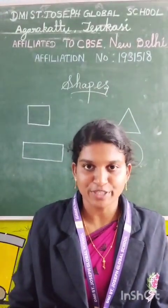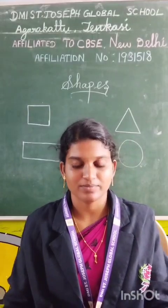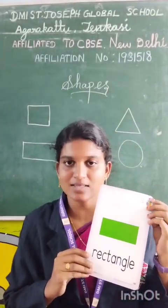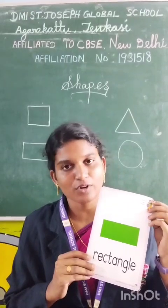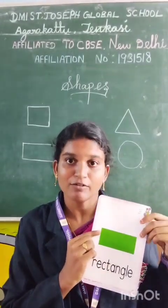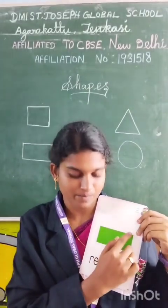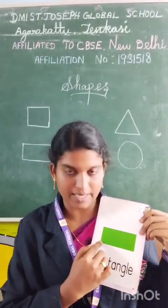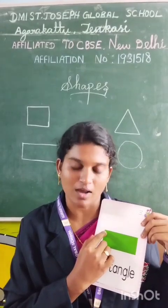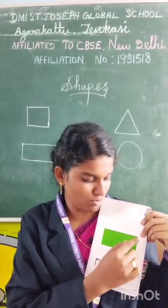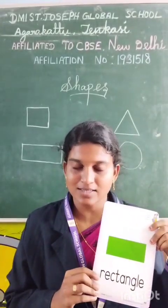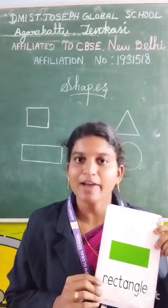Next, I am going to introduce rectangle shape. This is rectangle shape. It has four sides and four corners. How many sides? Four sides. One, two, three, four. And four corners. One, two, three, four. Rectangle has four sides and four corners.